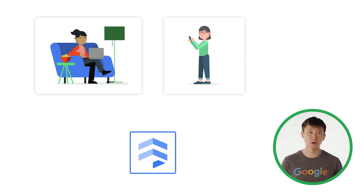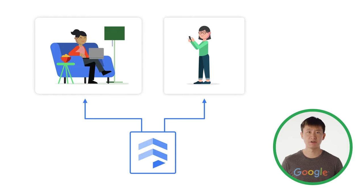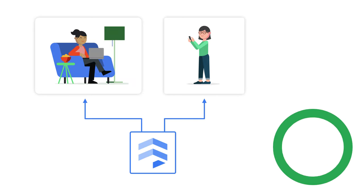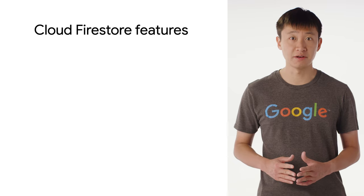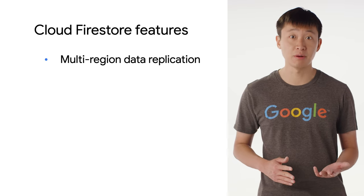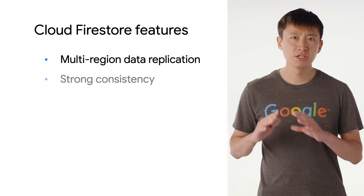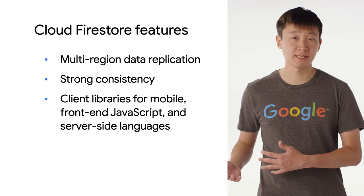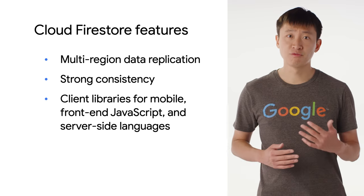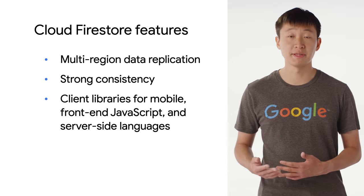Cloud Firestore has a real-time interface, which means that your users will be automatically updated in real-time whenever the database changes. This makes Firestore popular for applications where data needs to be synced across users and devices, such as gaming leaderboards or collaborative whiteboards. Other key features of Cloud Firestore include multi-region data replication for reliability, strong consistency, and robust client libraries for mobile apps, front-end JavaScript, and server-side programming languages.